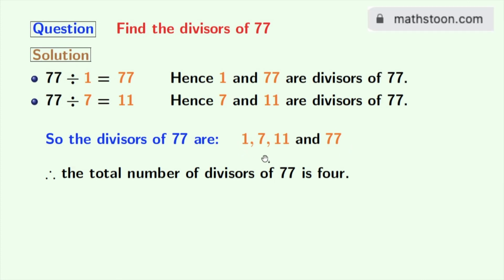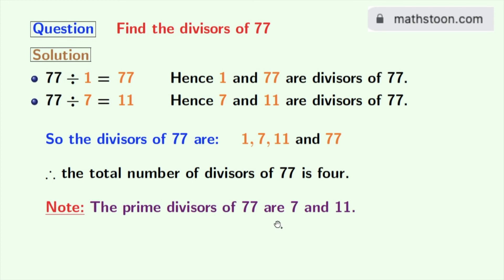Now if we look at these divisors, we can see that 7 and 11 are prime numbers, because these two numbers do not have any divisor other than 1 and the number itself. So we can say that the prime divisors of 77 are 7 and 11.